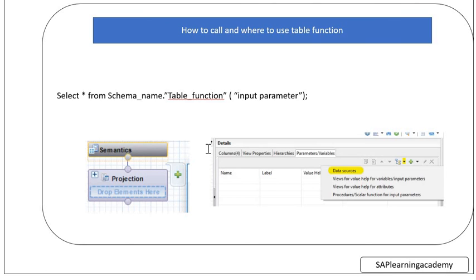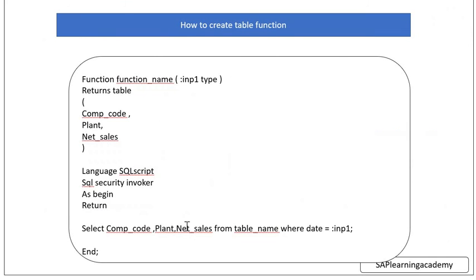Now I will show how to call a table function and use it in a calculation view. It is very easy — you use a FROM clause and write SELECT * FROM your table function. Your table function reference is written as your schema name dot table function name, followed by the input parameter in parentheses. If you use an input parameter in your table function then you provide it; otherwise you just provide a question mark.